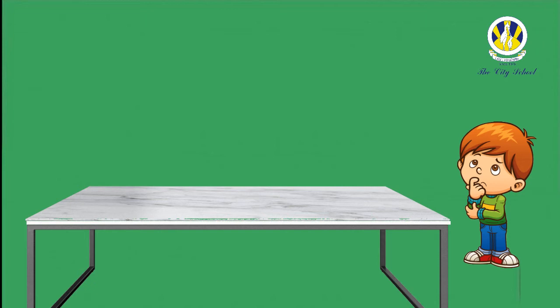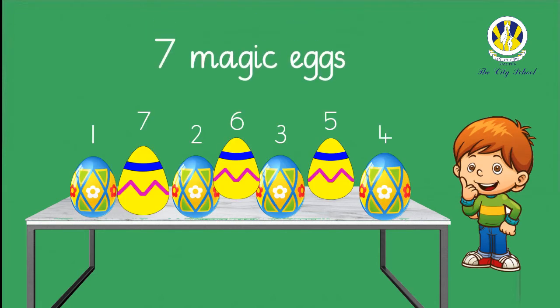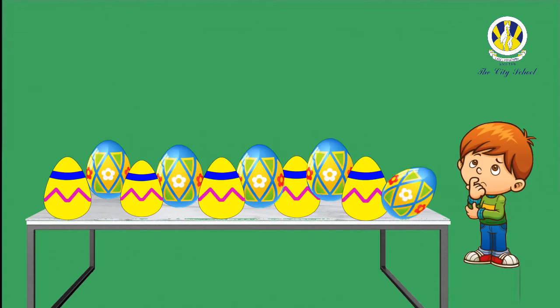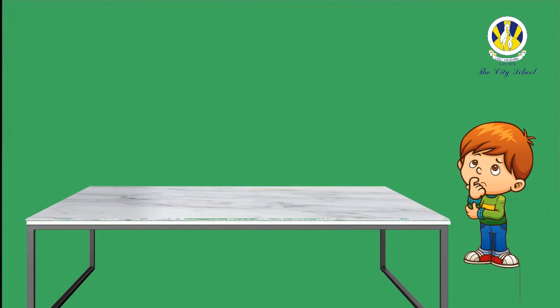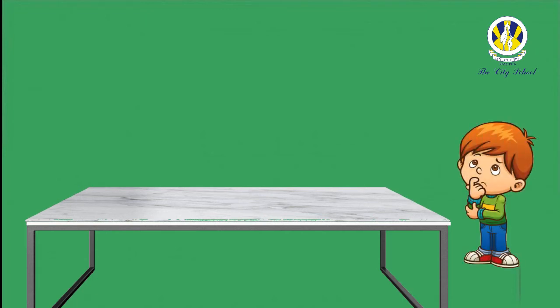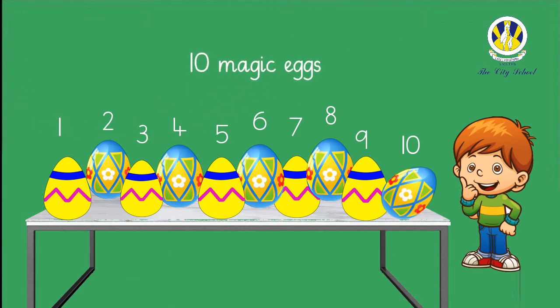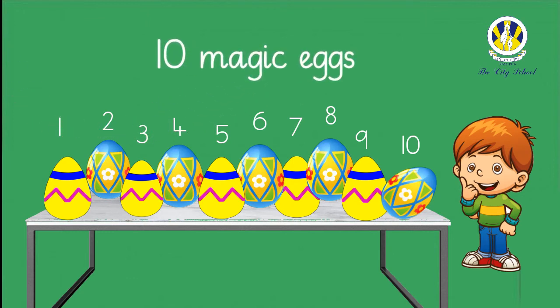There were seven magic eggs. Let's move on — make a quick estimation. Say your number out loud: how many magic eggs did you see this time? Great observation! Your estimation was close to the number. Let's check — there are 10 magic eggs.